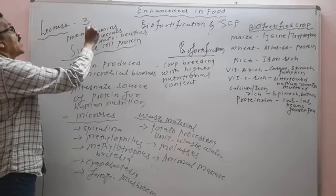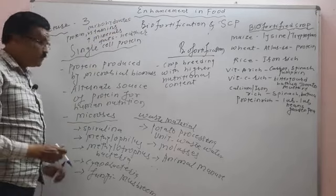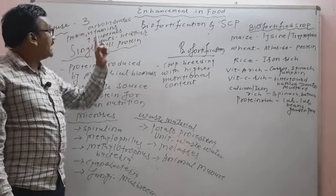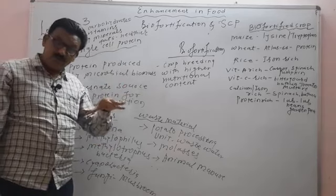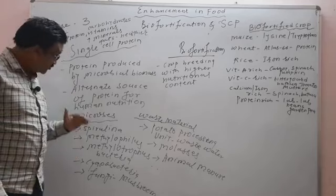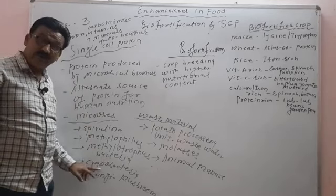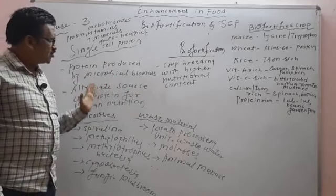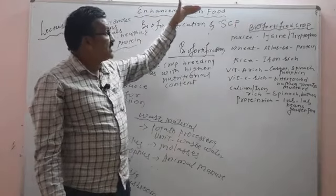Single-cell protein can be made from microbes like Spirulina, Methylophilus methylotrophus bacteria, and cyanobacteria. This is all about bio-fortification and single-cell protein.